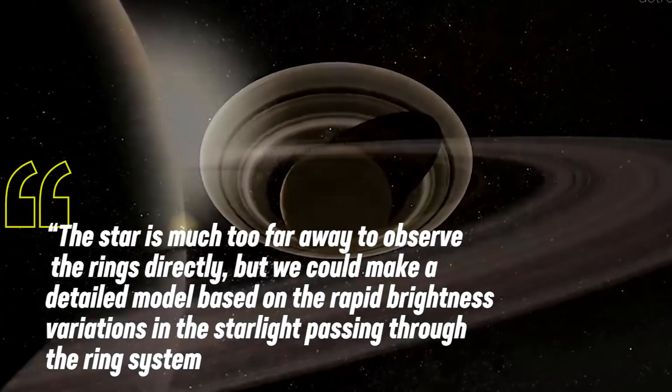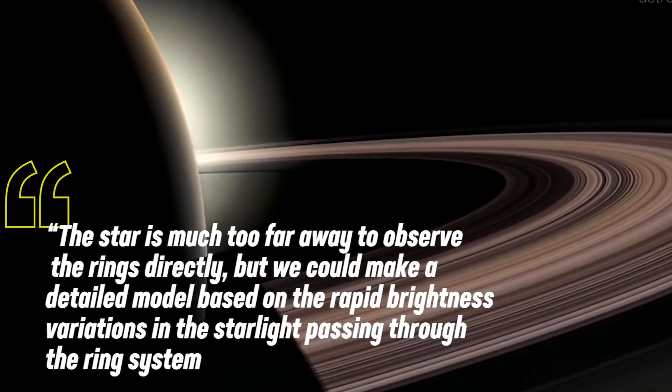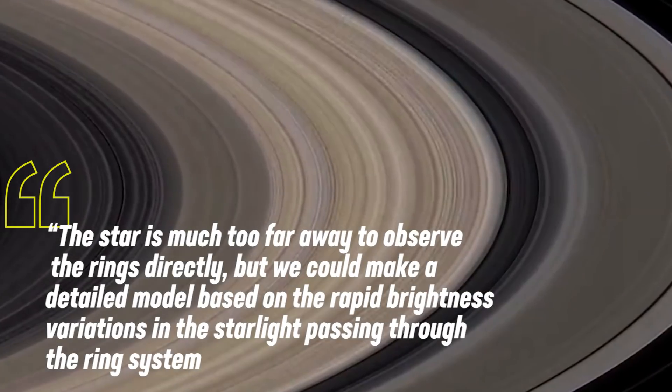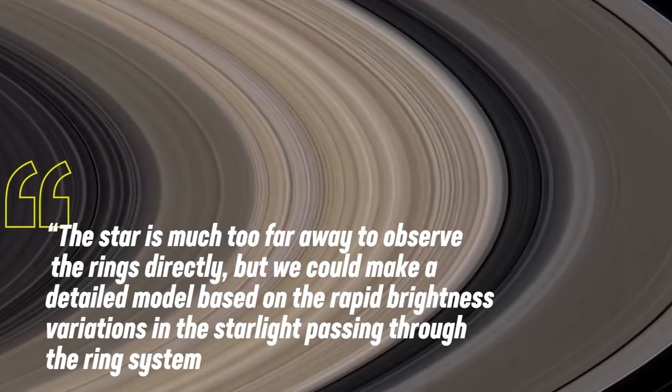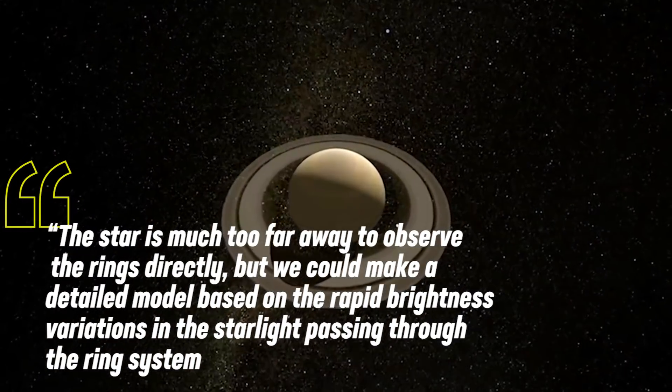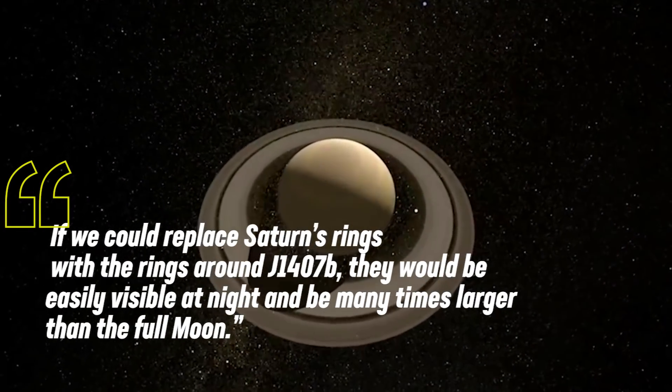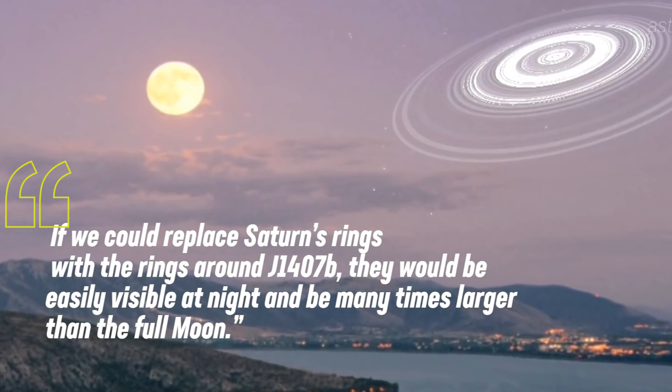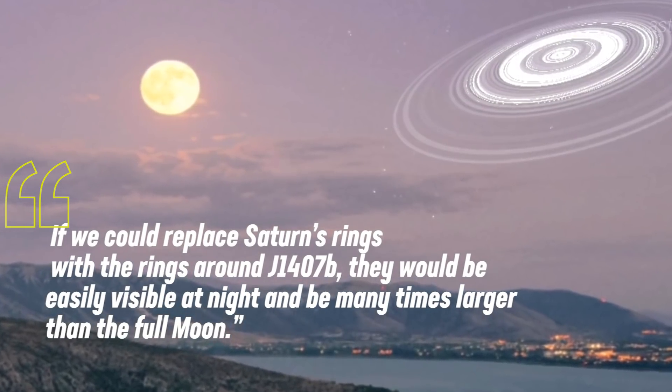According to the lead researcher, the star is much too far away to observe the rings directly, but we could make a detailed model based on the rapid brightness variations in the starlight passing through the ring system. If we could replace Saturn's rings with the rings around J1407b, they would be easily visible at night and be many times larger than the full moon.